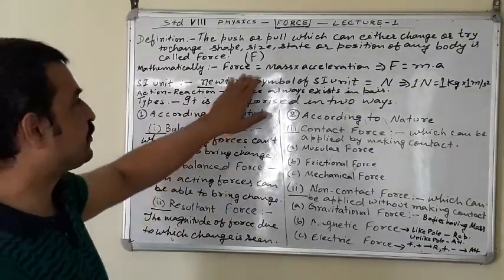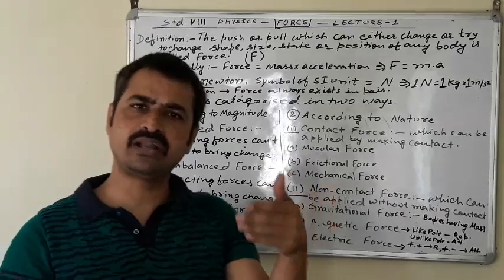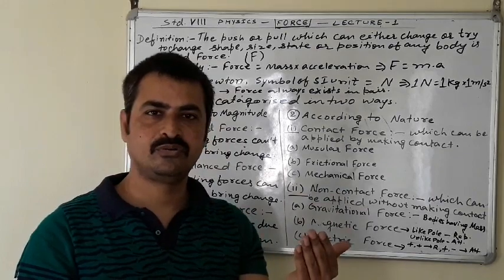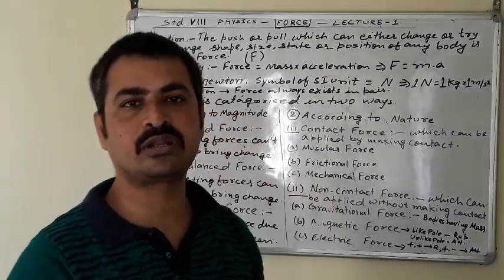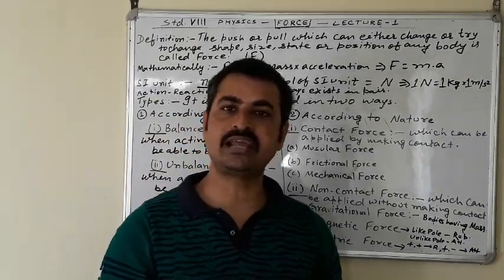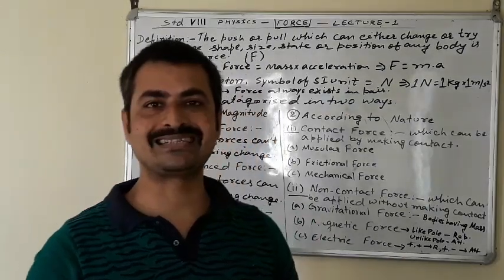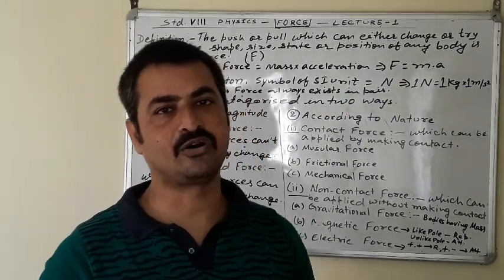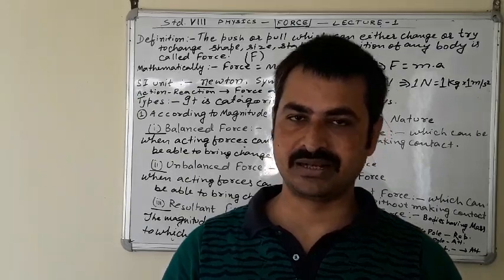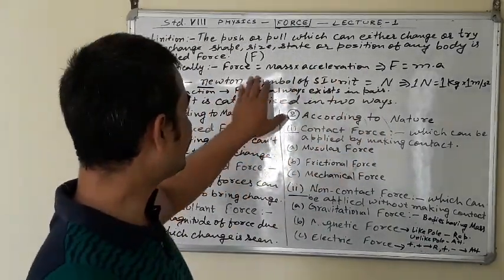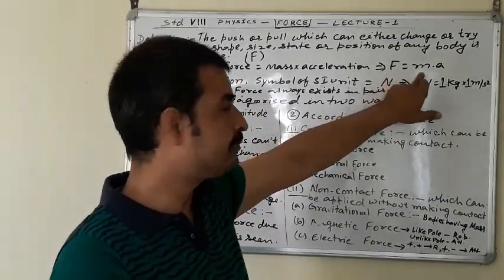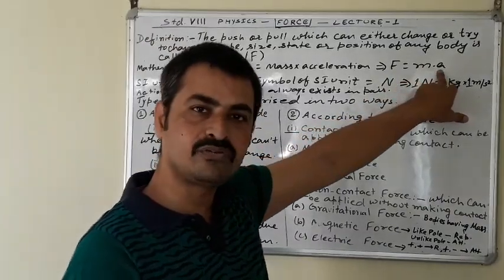Force is expressed as the product of mass and acceleration. You must have seen the accelerator in your motorbike or car — without acceleration nobody can move. If we provide more acceleration, the car or bike moves with more speed, meaning more force is applied. Force is expressed as F = ma, where F is force, m is mass, and a is acceleration.